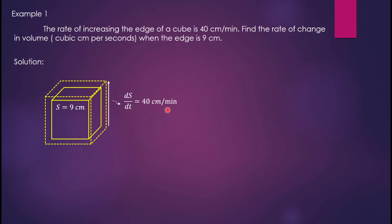Take note that the volume of a cube is equivalent to V equals s cubed. This is the formula: V equals s cubed. Applying derivatives, dV over dt equals 3s squared times ds over dt. We can now substitute the values of s and ds over dt.